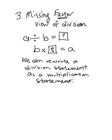So why it's called missing factor is because here I've got a multiplication statement and I don't know what one of the factors is. Let me show you this in practice. So if we have 12 divided by 4 equals something, I could think, well, 4 times something gives me 12. And I know my multiplication facts, so I know 4 times 3 is 12, that means 12 divided by 4 is 3.